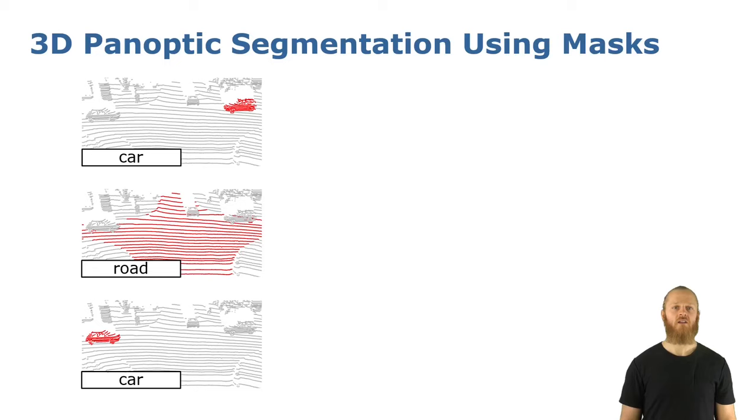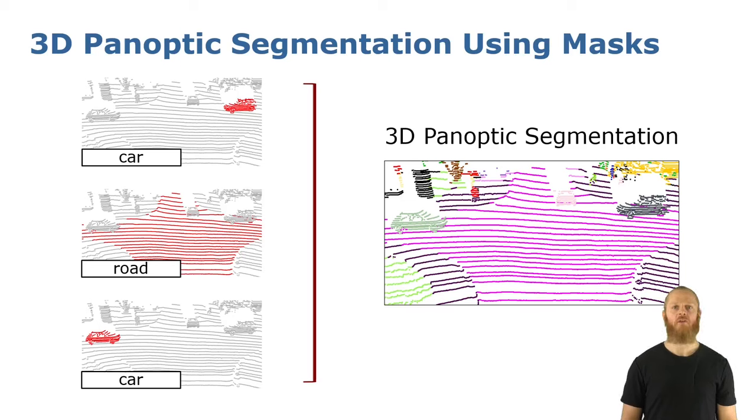Let's first see how we tackle 3D panoptic segmentation. We formulate the task as the prediction of a set of non-overlapping binary masks and semantic classes, which we combine to obtain the final panoptic segmentation. In this context, each mask represents either an instance, like a car, or a whole stuff class, like a road.